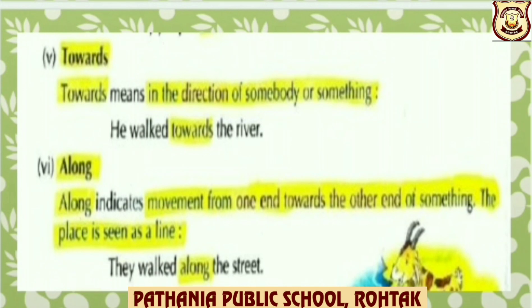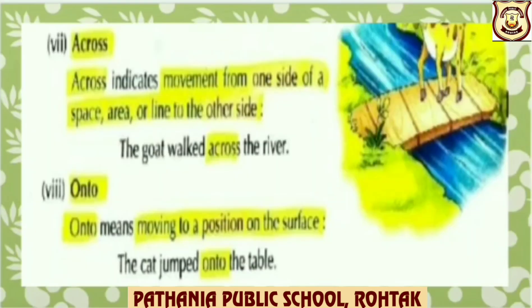Along indicates movement from one end towards the other end of something. The place is seen as a line. For example: They walked along the street. Next, across — across indicates movement from one side of a space, area or line to the other side. For example: The goat walked across the river, that means from one side to the other side.